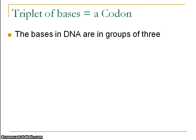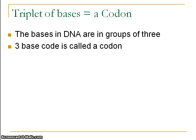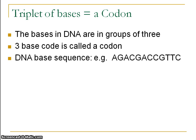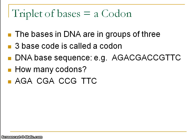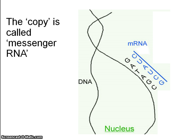A point about the DNA bases is that they are in groups of three called a codon. So for this sequence of bases, you can see that there are four codons. In black you can see the DNA sequence of bases, and the copy made in blue is known as messenger RNA.